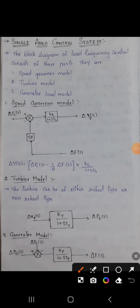The topic is about single area control system. To draw the main block diagram of a single area control system, there are three parts: speed governor model, turbine model, and generator load model. So we have three block diagrams to draw. First, we draw the speed governor model with input Pc(s).